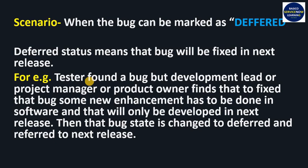For example, a tester found a bug but the development lead, project manager, or product owner finds that to fix that bug, some new enhancement has to be done in the software, and that will only be developed in the next release. Then the bug state is changed to Deferred and referred to the next release.